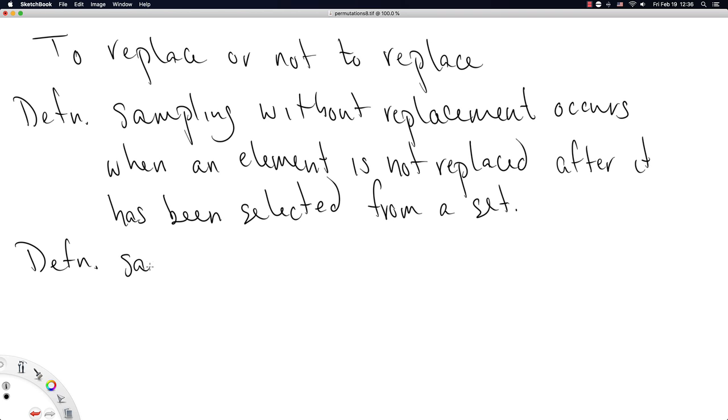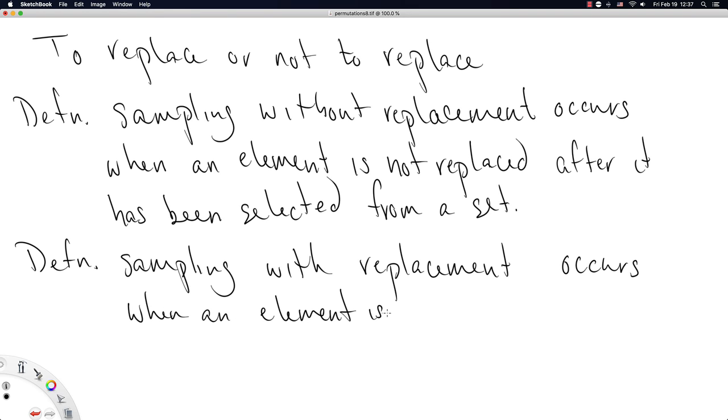And you might get the idea here that there is also sampling with replacement. Sampling with replacement occurs when an element is replaced after it has been selected from a set.